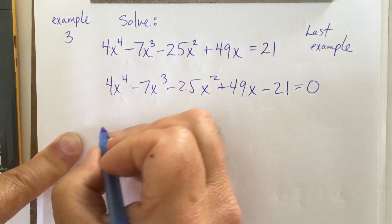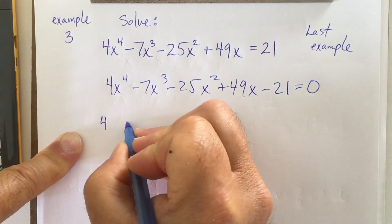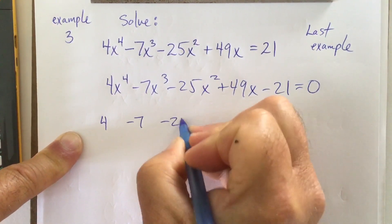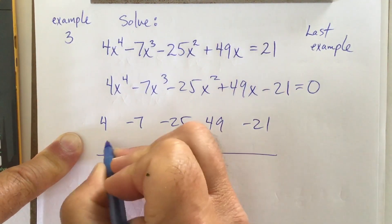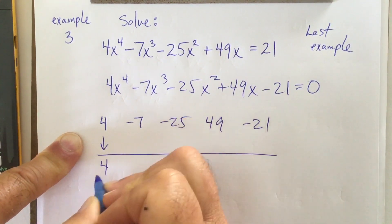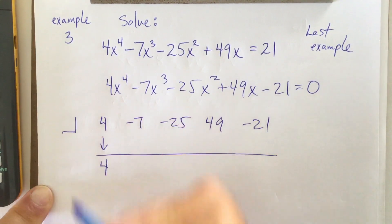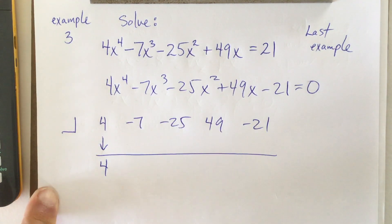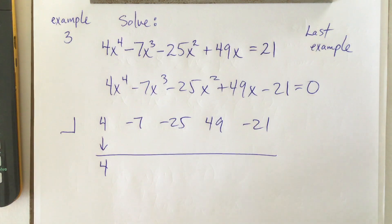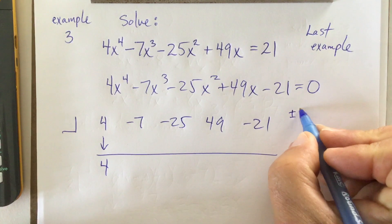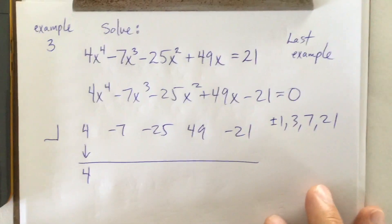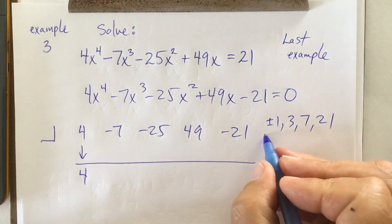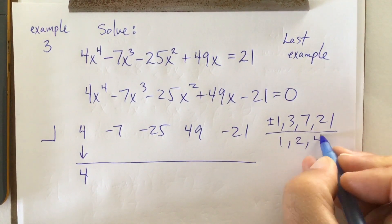And then I would say, well, I'm going to have to use synthetic division twice to do this, so I might as well get it ready to roll. I might as well get everything ready to rock. I'm going to bring down a 4. I'm going to have to pick a shelf number twice to do this, but I don't want to just pick any shelf numbers. So, what are the possible ones that would work for me? Plus or minus 1, 3, 7, or 21, and then what would be the bottom part? 1, 2, or 4.